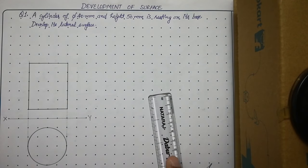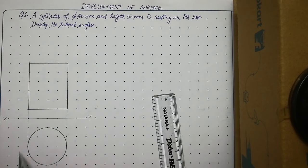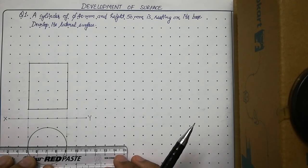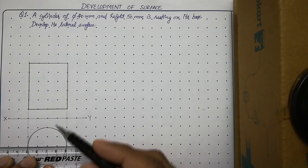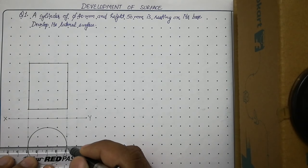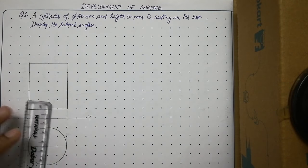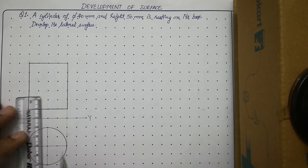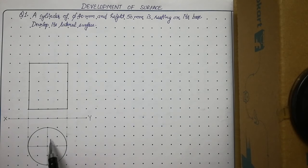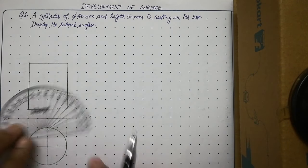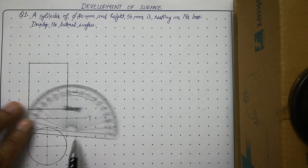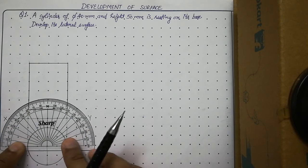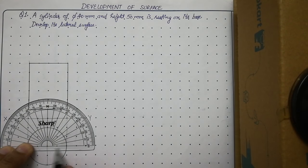Now we need to divide this circle into 8 equal parts. Align your scale with the horizontal row and draw its horizontal diameter — it must be thin. Then align with the column and draw a thin vertical diameter. Now we have 4 parts. To divide further into 8 parts, use your protractor. Put your protractor at the center and align it with the horizontal diameter of the circle.